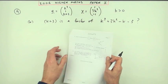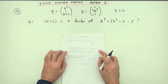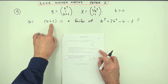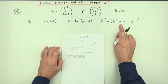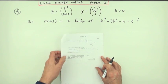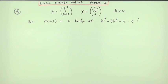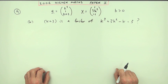Part b then — five marks for this. Show that (k+3) is a factor and factorize completely. There are three ways you could do this.